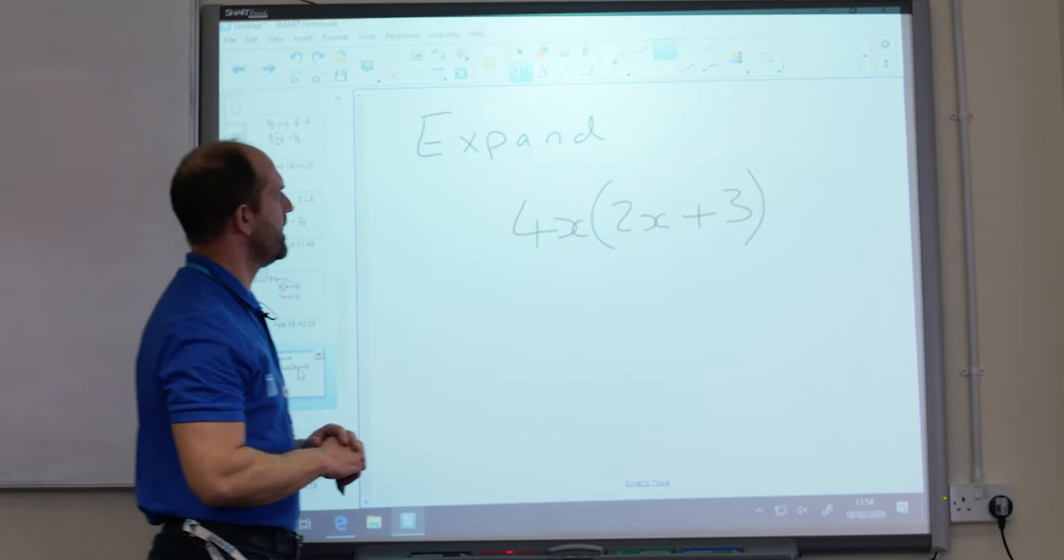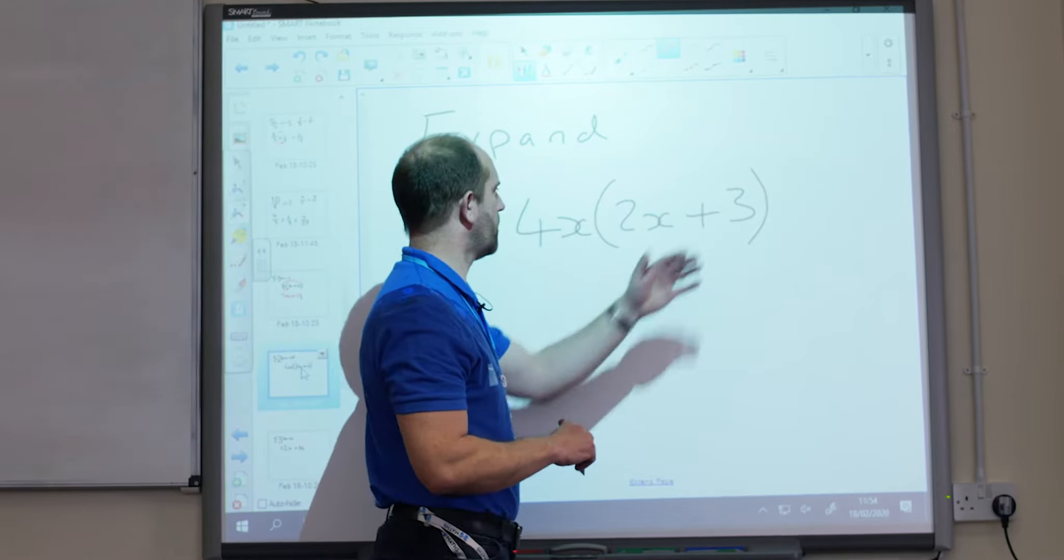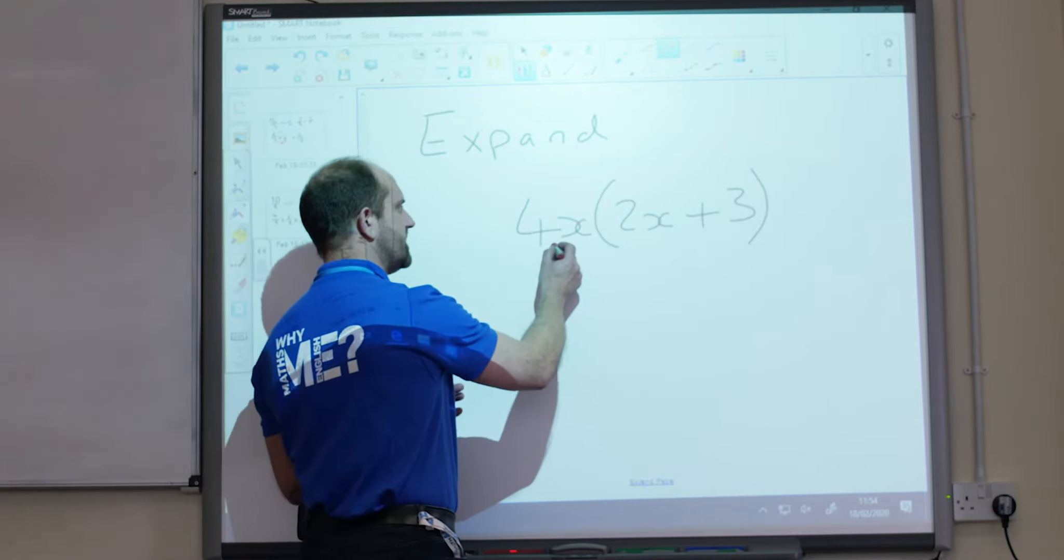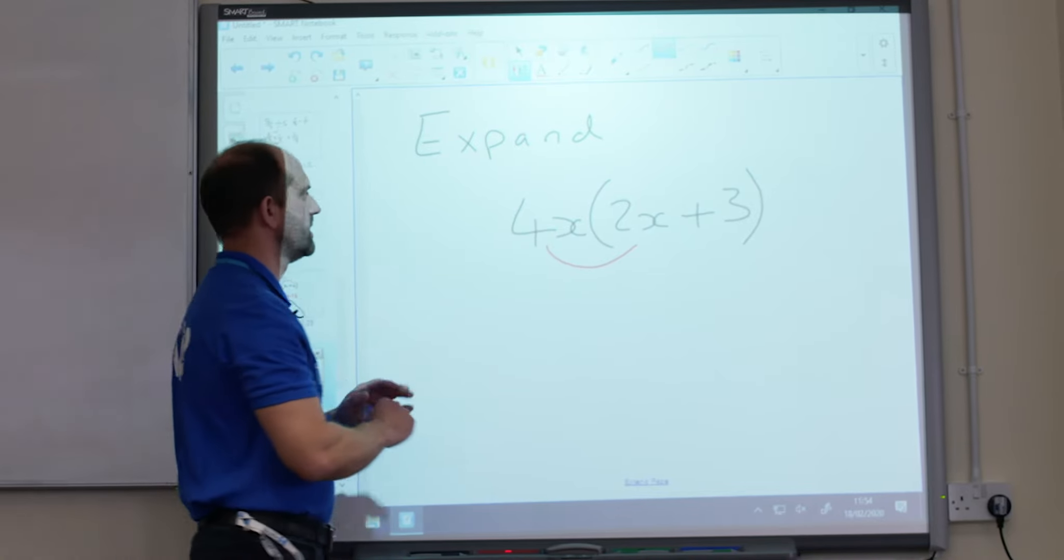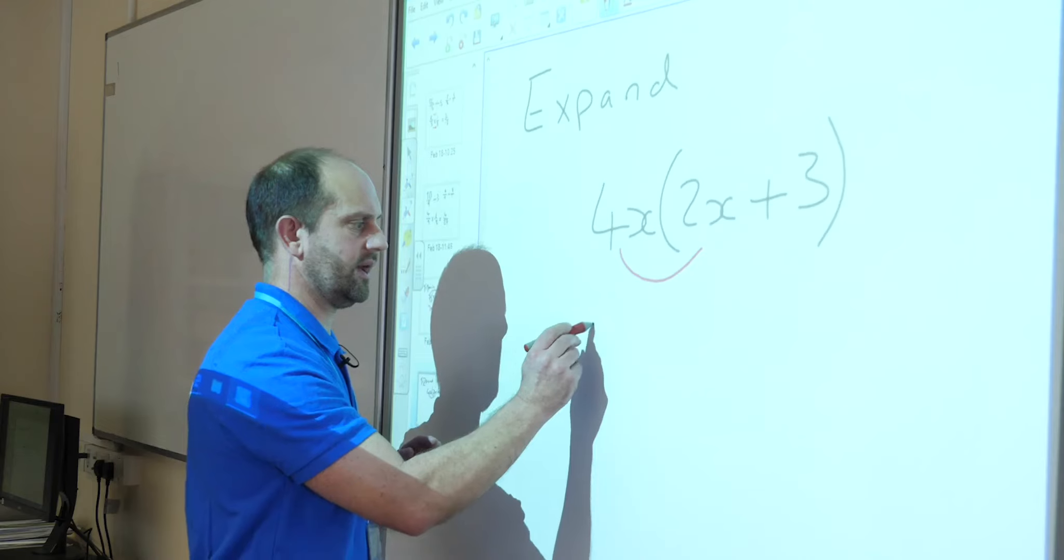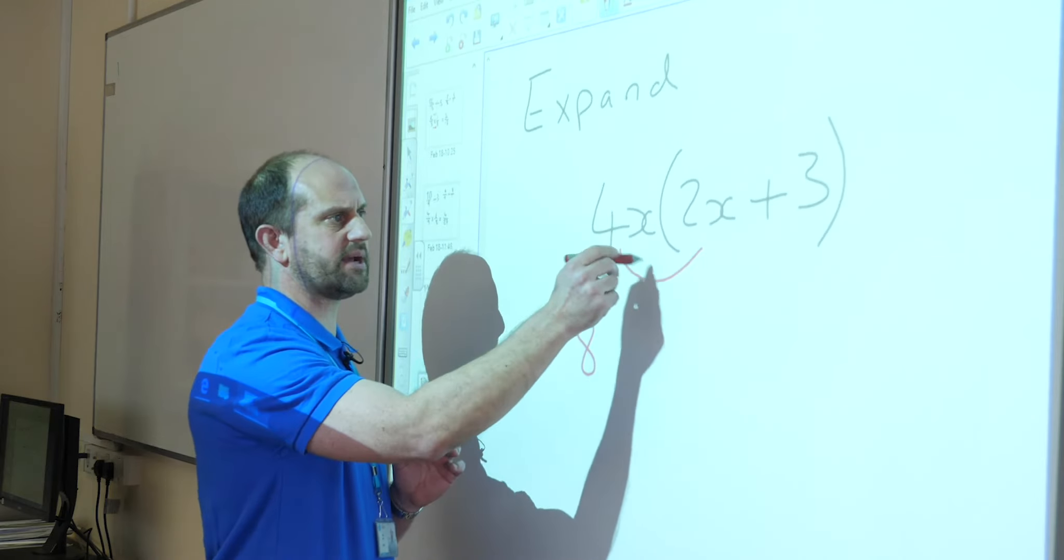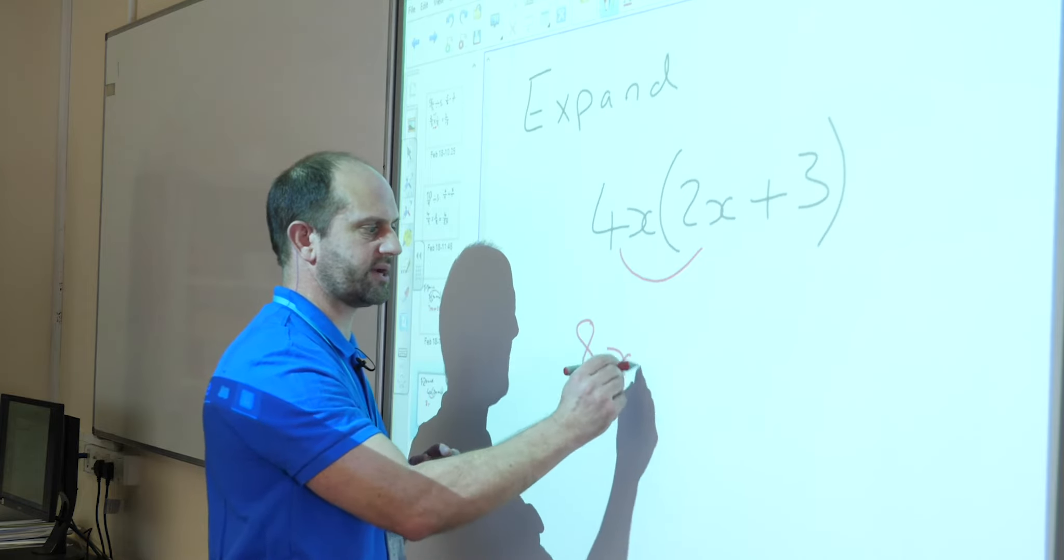My next one, I'm going to multiply again what is outside by what is inside. So in this case, I've got 4x times 2x, so 4 times 2 is 8, and x times x gives me x squared.